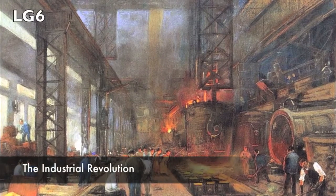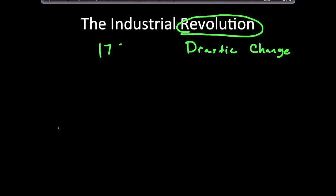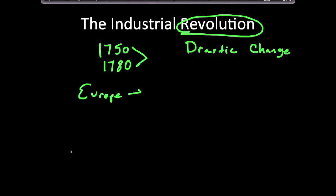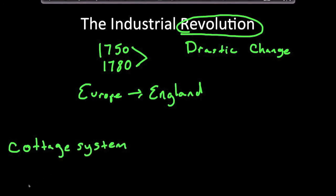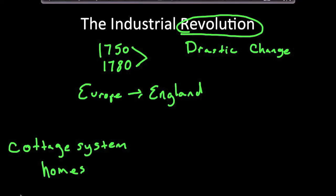Today I want to briefly discuss the Industrial Revolution. Revolution again means a drastic change. The Industrial Revolution began in about 1750–1780 in England. The change was moving from a system where goods were made in the cottage system — meaning in people's houses, very small scale — to the factory system, where goods are mass produced on a large scale.